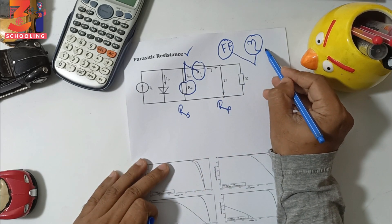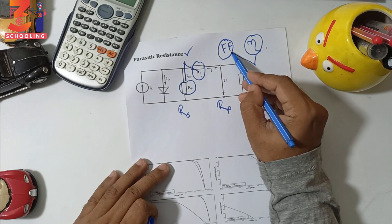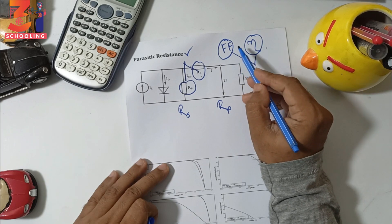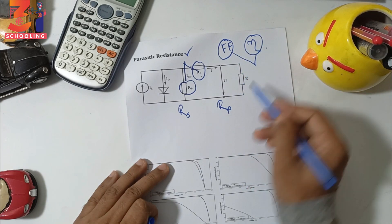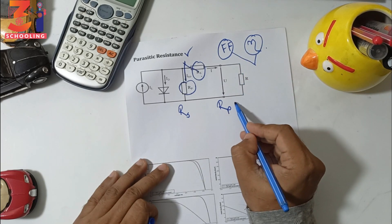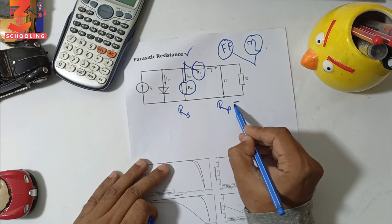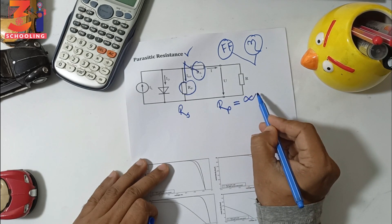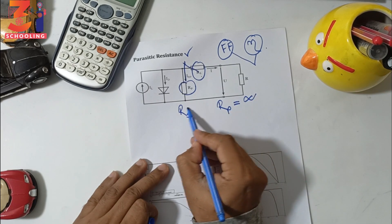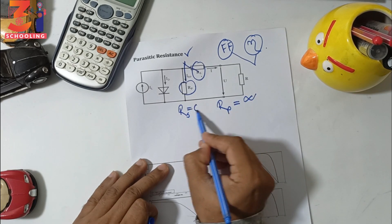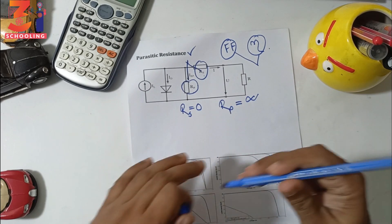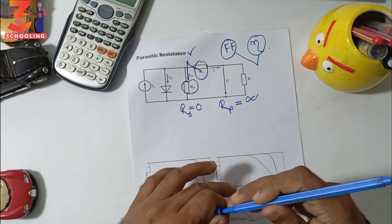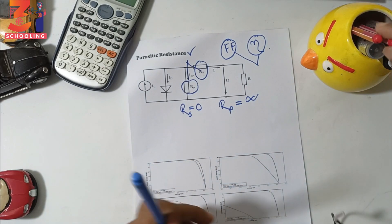If we want good efficiency and high fill factor, then ideally the Rp value should be infinity and the Rs value should be zero. This is the ideal condition we want to achieve.